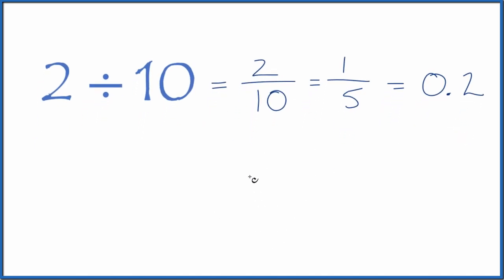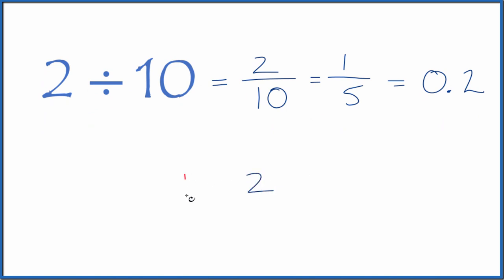If you wanted to do it longhand, you could say 2, and you want to see how many times 10 goes into 2. 10 doesn't go into 2, but we could call it 20 if we put a 0 and a decimal point here.